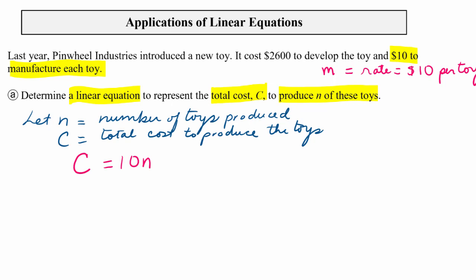But where does the $2,600 come in? Well that's the initial cost to develop the toy, and it's a one-time cost, isn't it? So we are going to add that $2,600 to the 10n. And so in this case, you can see that it's acting as our intercept, isn't it, as our C-intercept.